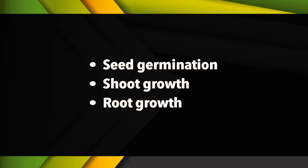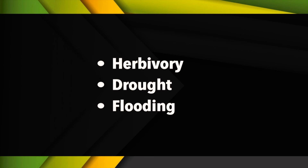In rice, jasmonic acid has proven an effective regulator of important growth and developmental processes, both positively and negatively. It inhibits seed germination, shoot growth, and root growth, while promoting spike development and enhancing senescence. It also helps the plant develop resistance against various stresses like herbivory, drought, and flooding.